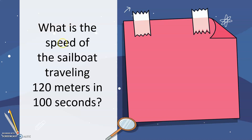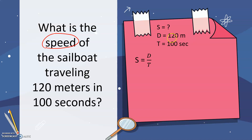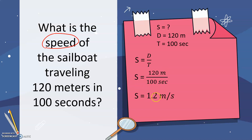Let's try more examples. What is the speed of a sailboat traveling 120 meters in 100 seconds? We are asked to find speed, so we use the formula distance over time. We're given that distance is 120 meters and time is 100 seconds. So we have 120 meters over 100 seconds, and dividing gives us 1.2. Our unit is meters per second. The speed of the sailboat is 1.2 meters per second.